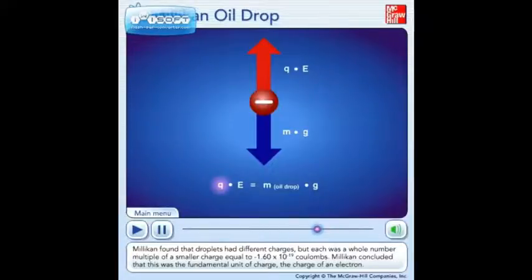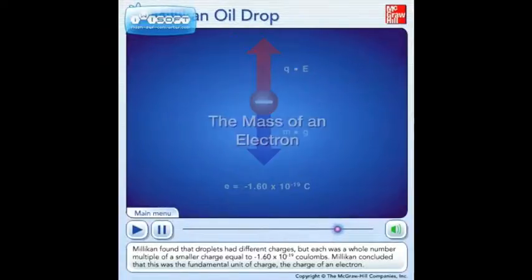Millikan found that droplets had different charges, but each was a whole number multiple of a smaller charge, equal to negative 1.60 times 10 to the negative 19th coulombs. Millikan concluded that this was the fundamental unit of charge, the charge of an electron.